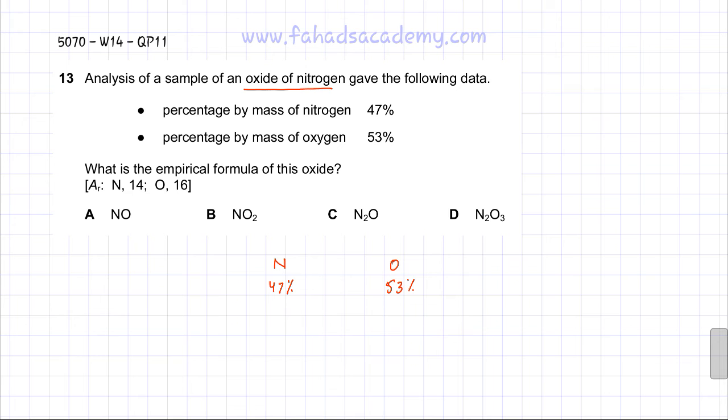So the first thing we need to find is the moles. Moles is mass divided by the atomic mass, which for nitrogen is 14, and we're going to find the moles for oxygen as well. So it's going to be 53 - remember, percentage mass, we're going to treat percentage mass as mass - divided by the AR of oxygen, which is 16. Using my calculator to find the values, for nitrogen it's 3.357, and for oxygen it's 3.313. They're approximately the same amount of moles.